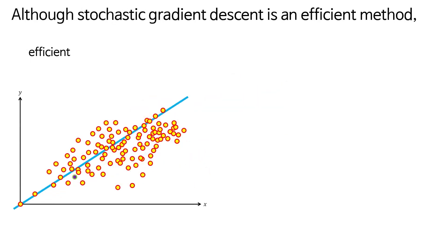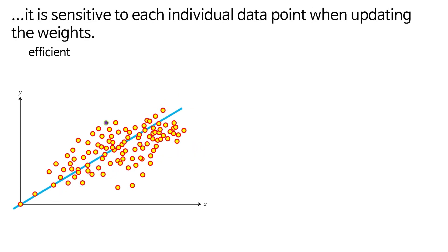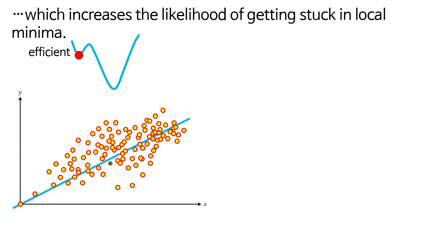Although stochastic gradient descent is an efficient method, it is sensitive to each individual data point when updating the weights, which increases the likelihood of getting stuck in local minima.